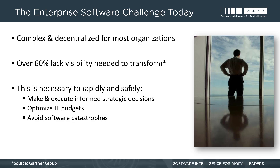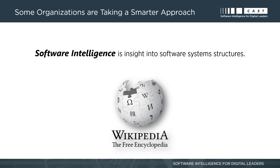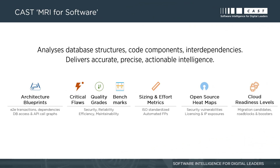This visibility is absolutely necessary to rapidly and safely make and execute informed strategic decisions, optimize IT budgets, and avoid software catastrophes. That's why some organizations are taking a smarter approach and using what's called software intelligence. Software intelligence is insight into software systems structures.